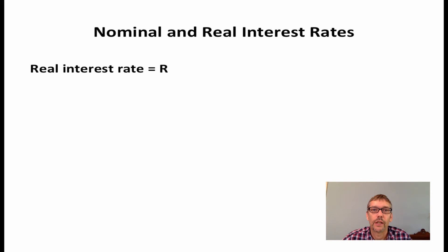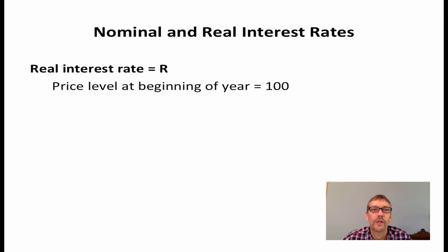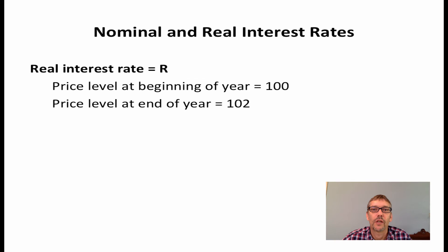Consider again our one-year loan. However, now suppose that over the course of the loan, the price level increases by 2%. We can represent this by assuming that at the beginning of the year the price level is $100, and at the end of the year the price level is $102.